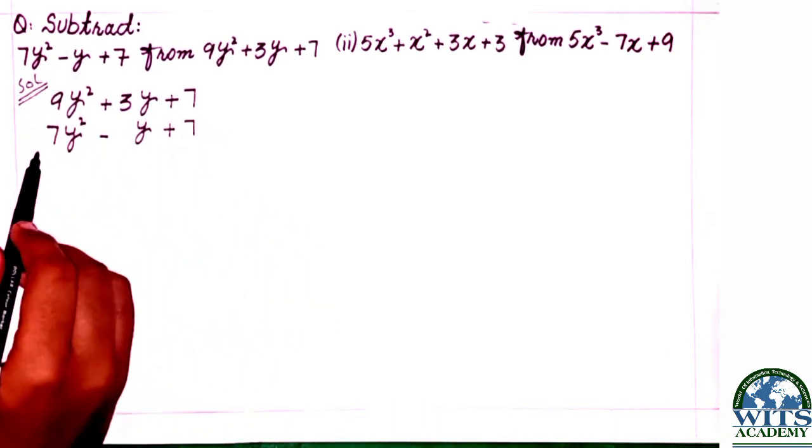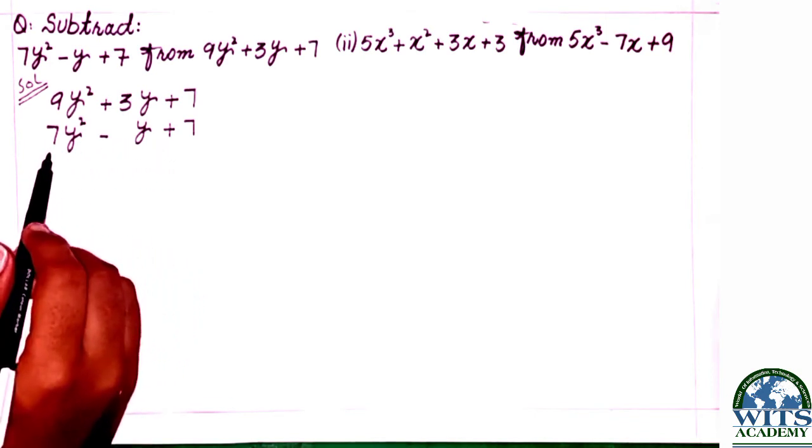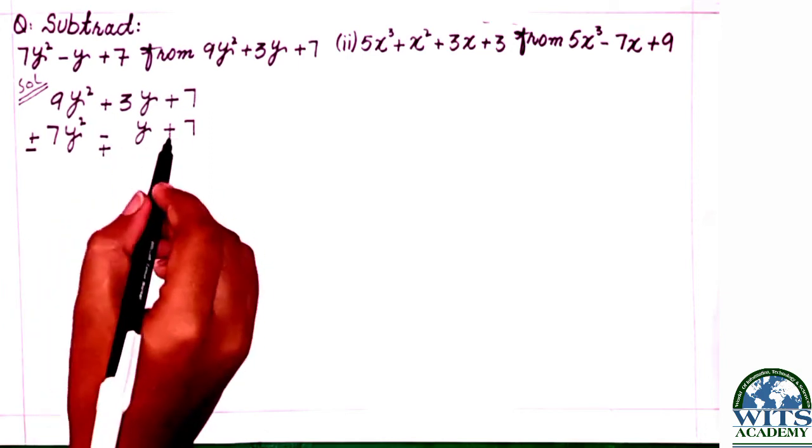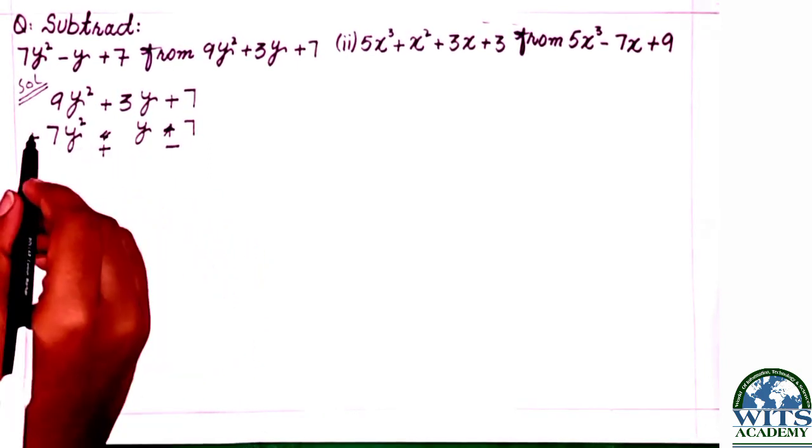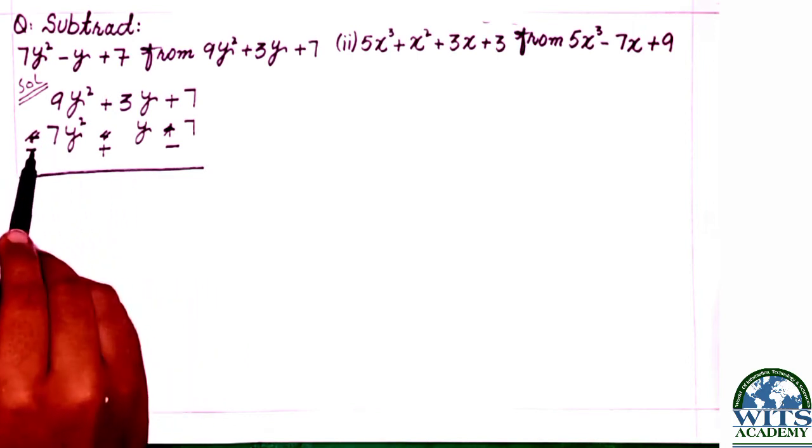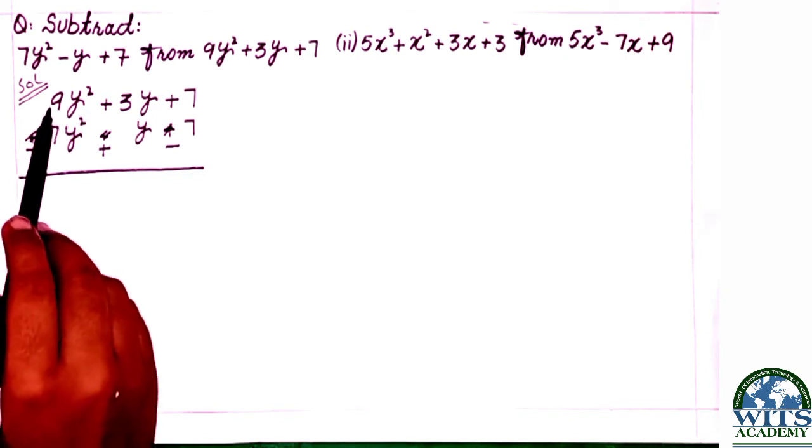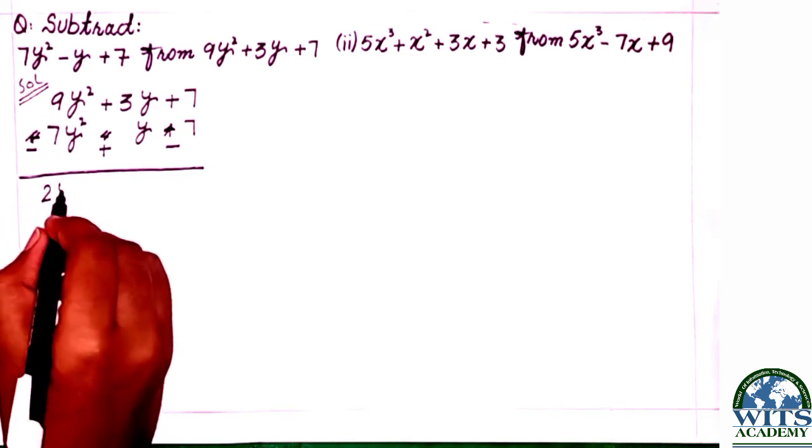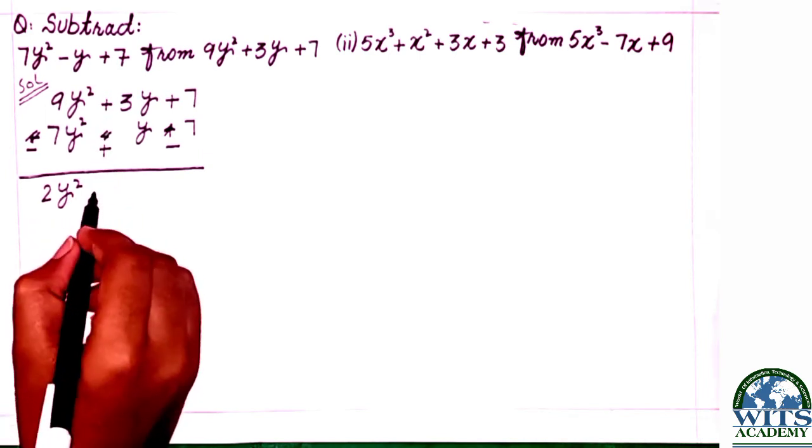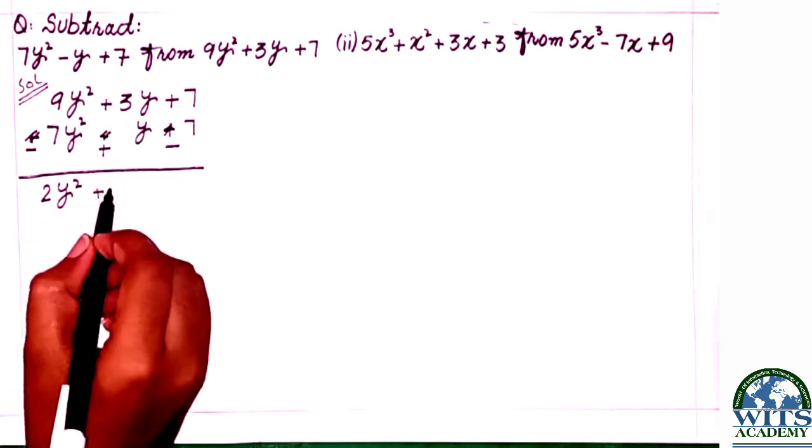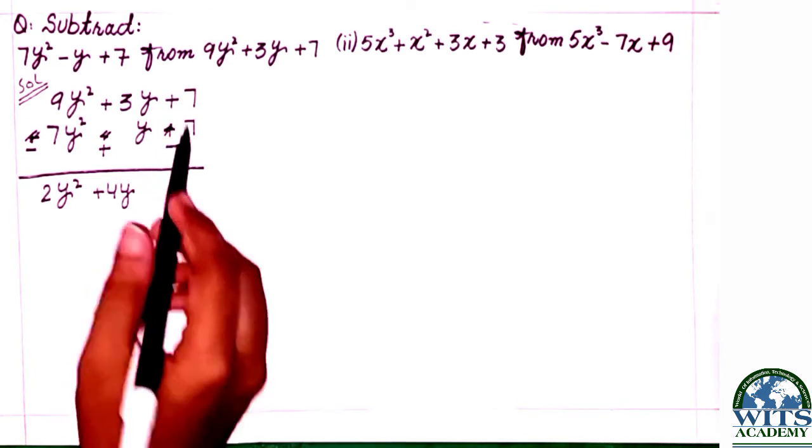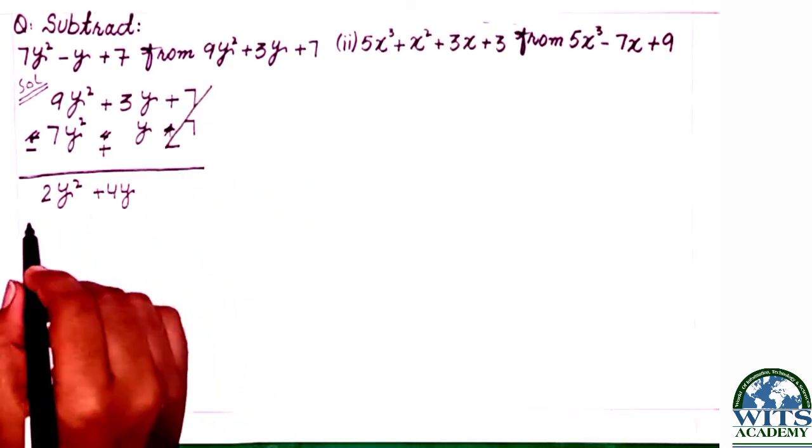Students, we have to know that when we do subtraction, we change the signs of the bottom polynomial. 7 with plus sign becomes minus. Minus becomes plus. First the sign change is done. Now we will solve: 9 minus 7 with opposite signs, we subtract to get 2y squared. For y terms: 3y plus 1y equals 4y. For constants: plus 7 minus 7 equals zero. Our answer is 2y squared plus 4y.